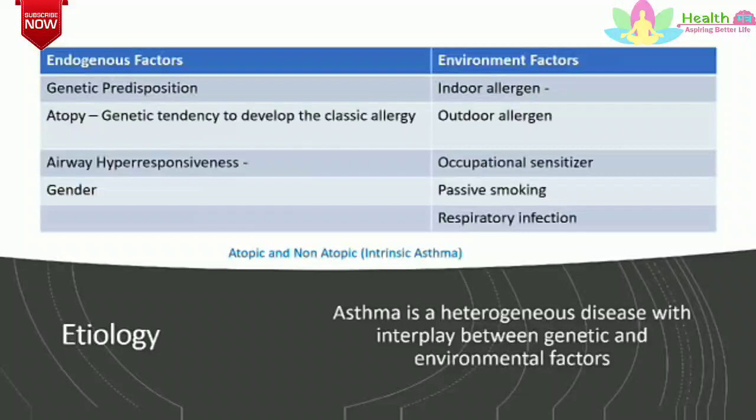Etiology of Asthma. It is a heterogeneous disease — meaning consisting of parts or things that are very different from each other — with interplay between genetic and environmental factors. The endogenous factors include genetic predisposition, atopy meaning a genetic tendency to develop classical allergy, airway hyper-responsiveness, and gender.